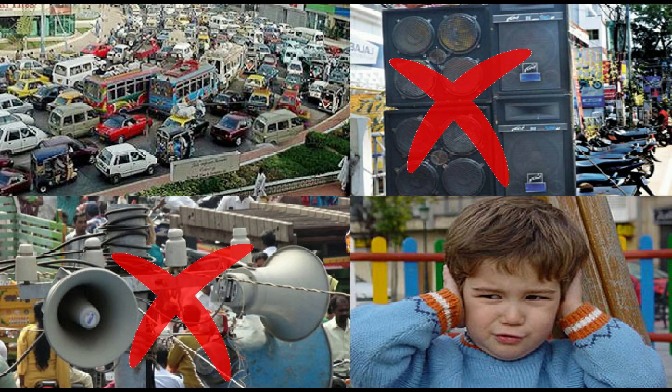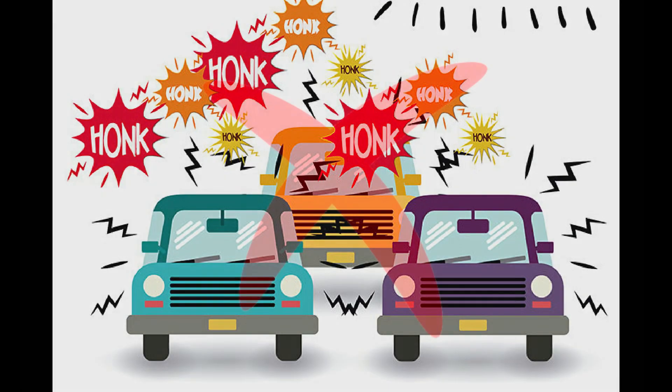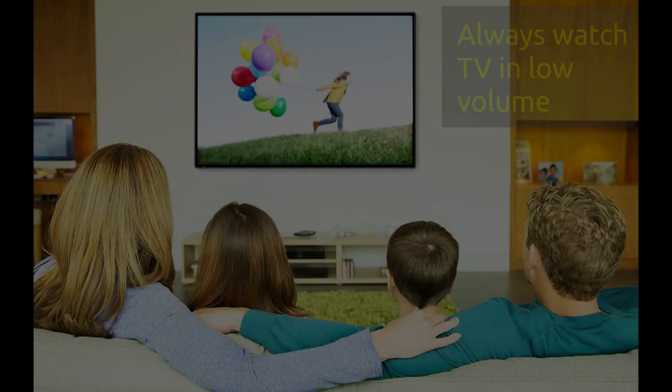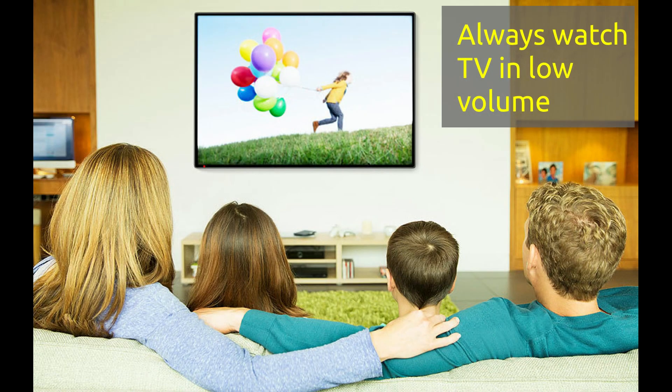Like other pollution, noise pollution can also be controlled. Let's see different practices which can reduce it in our day-to-day life. 1. The use of loudspeakers at functions should be stopped. 2. Cars and other vehicles should not produce loud sounds. 3. TV and musical systems should be listened to at low volumes.